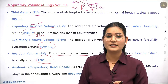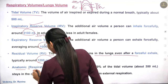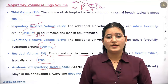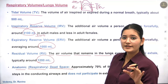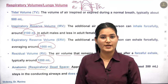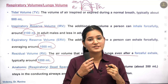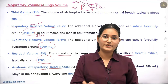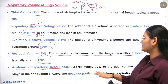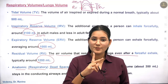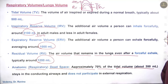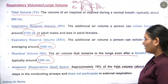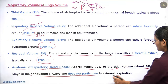Next is anatomical respiratory dead space. As mentioned in the previous lecture, from the nose to the terminal bronchioles there is no gas exchange — gases are not mixed here. This area is called anatomic respiratory dead space because exchange does not happen here. This is approximately 70% of the tidal volume — so if tidal volume is 500 ml, dead space is about 350 ml. It stays in the conducting airway and does not participate in external respiration.